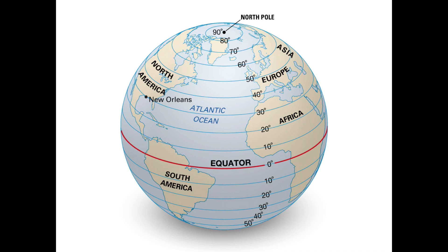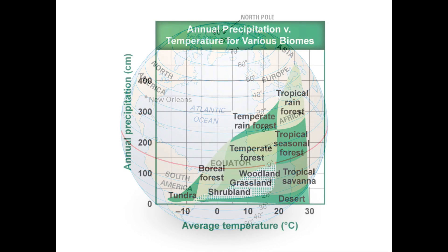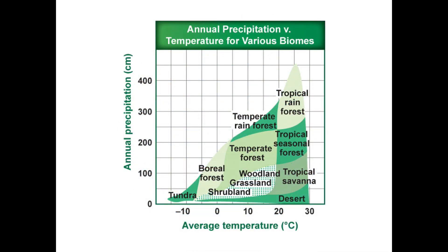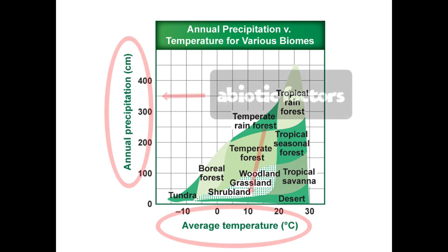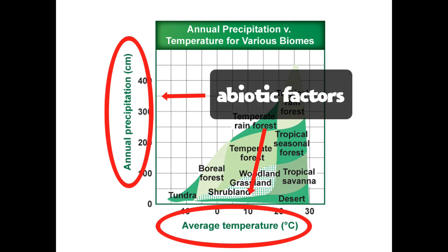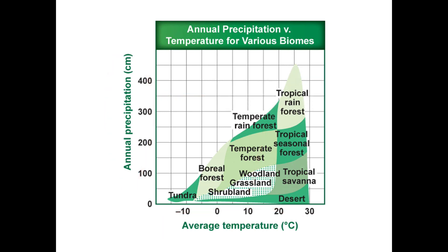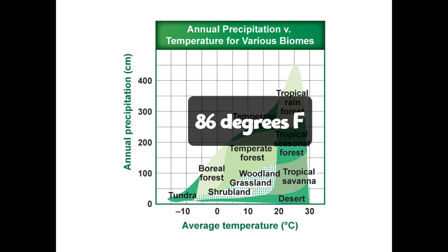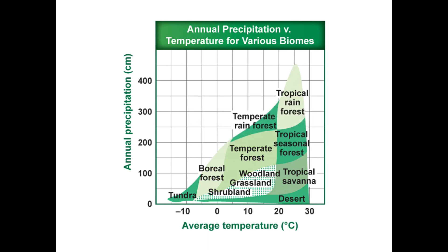Now we're looking at a graph from your textbook. The x-axis shows average temperature, ranging from about negative 20 degrees Celsius on the left to 30 degrees Celsius on the right. The y-axis shows annual precipitation, from zero up to 400 centimeters per year. Starting from the lowest rainfall, I've highlighted tundra and desert — these are essentially both in the low-precipitation category.